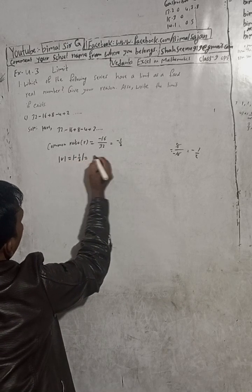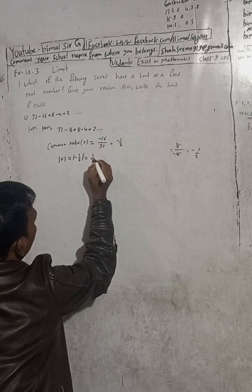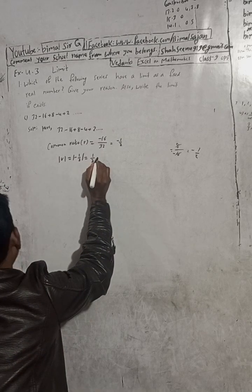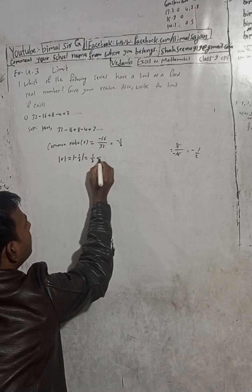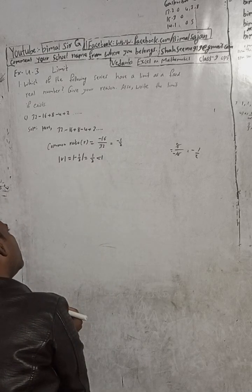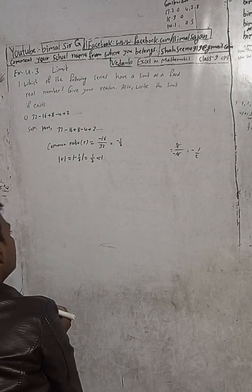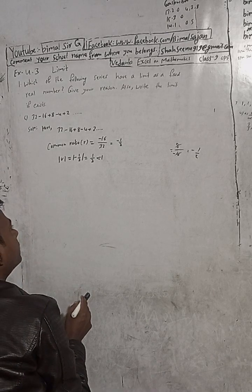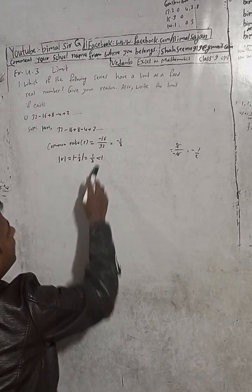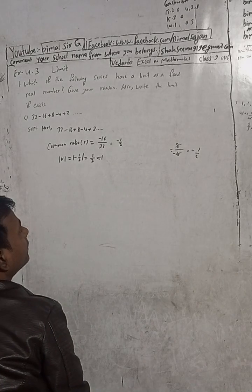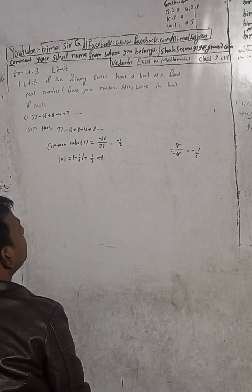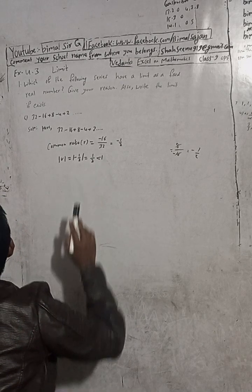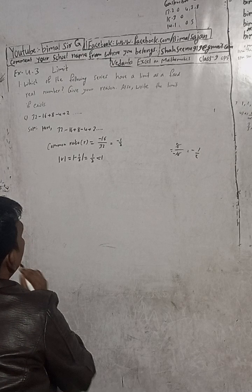Now, what is the modulus of R, which is minus 1 by 2? The modulus of 1 by 2 is 1/2. Is 1/2 less than 1? Yes, it is less than 1.